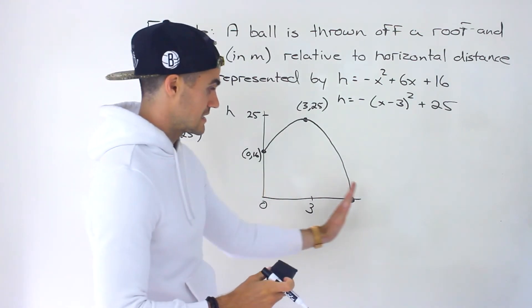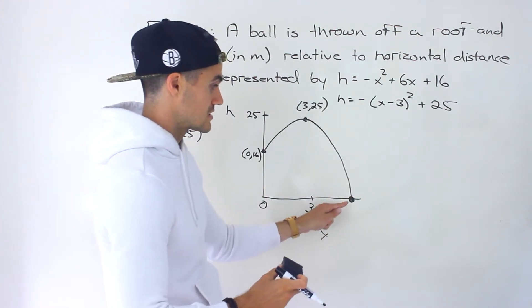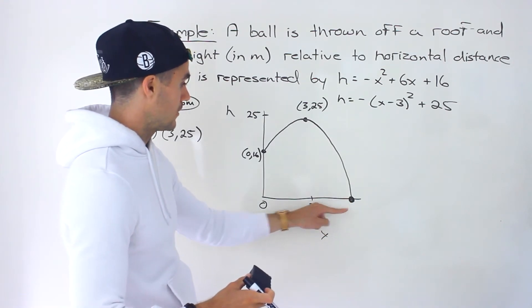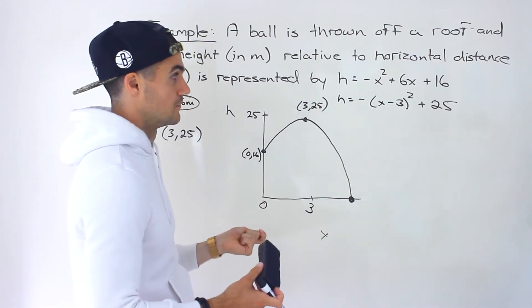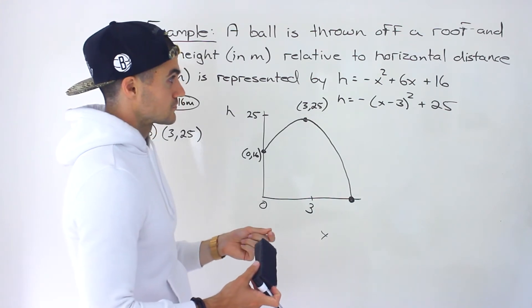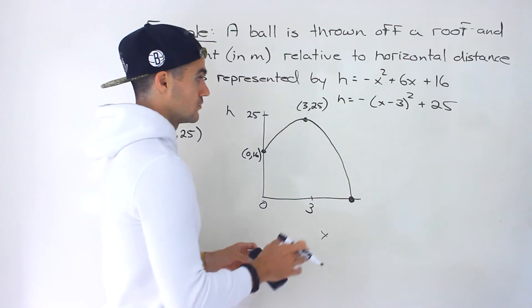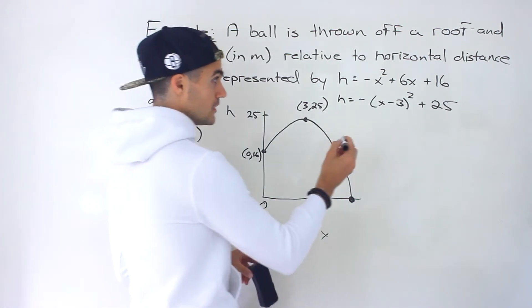And so it's hitting the ground right there. And so that's what we're going to have to solve for in part C. They're asking at what horizontal distance does the ball hit the ground. And so notice when it hits the ground, what's the h value going to be? Well, it's going to be zero. And so that's going to be a quadratic equation.